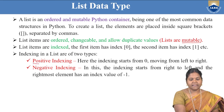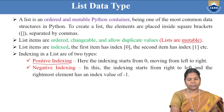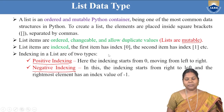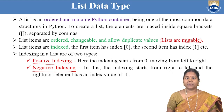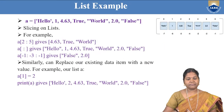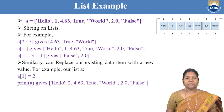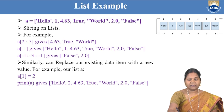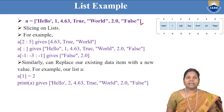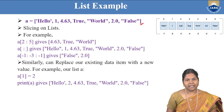Indexing in a list is of two types: one is called positive indexing and one is called negative indexing. Positive indexing starts from 0, moving from left to right. Negative indexing starts from right to left and the numbers start from minus 1, minus 2 and so on. To create a list, we use square brackets and a list can contain heterogeneous data elements.